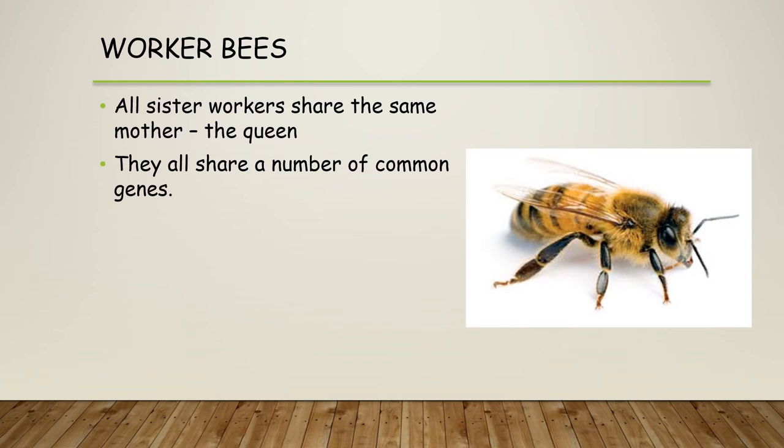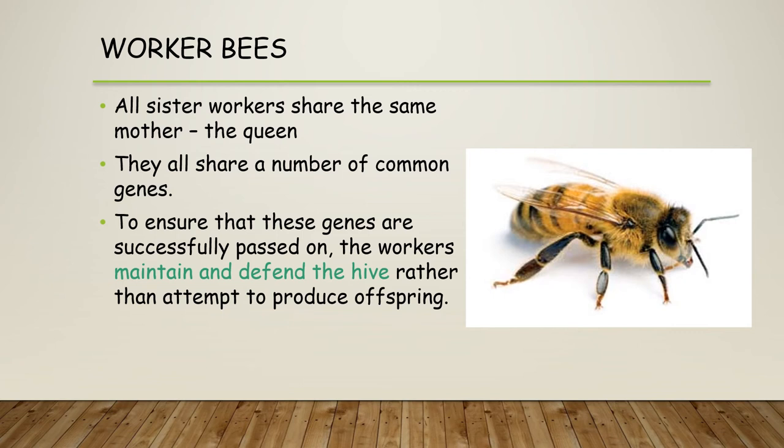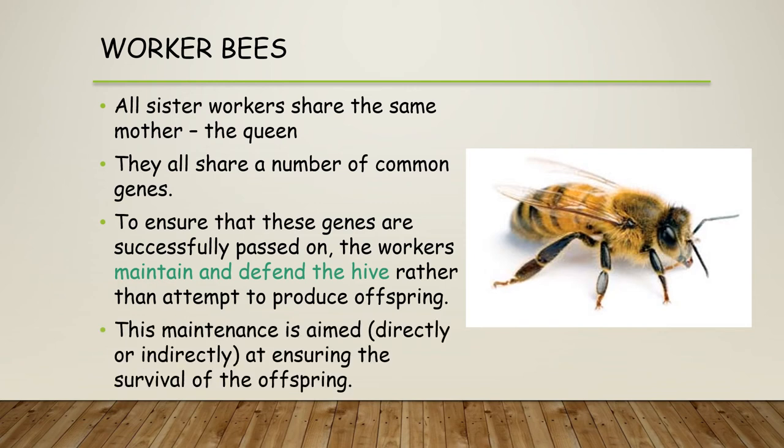The drones play a purely reproductive role, fertilising the eggs produced by the queen. Worker bees are all sisters sharing the same mother — the queen — and therefore share a number of common genes. Their role is to ensure those genes are successfully passed on by maintaining and defending the hive rather than producing offspring themselves, and that maintenance is aimed directly or indirectly at ensuring survival of the offspring within the hive.